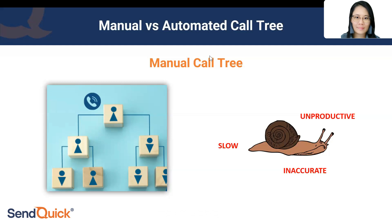Even with a tree structure, manual call trees are still quite slow and unproductive. If the person you call doesn't answer, you have to call again and take note to retry. The person further down the chain can't be reached because the link above hasn't responded. It's also quite inaccurate, especially for reporting, because there are many possibilities for human error.